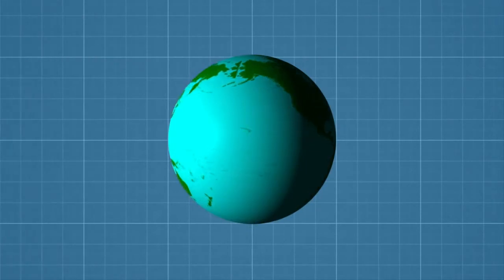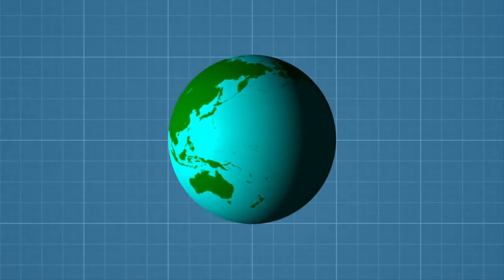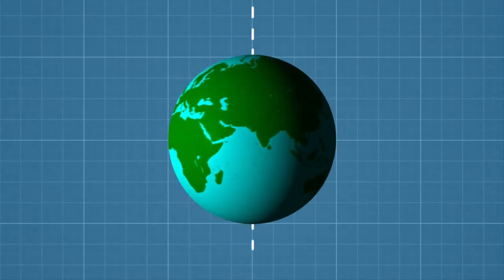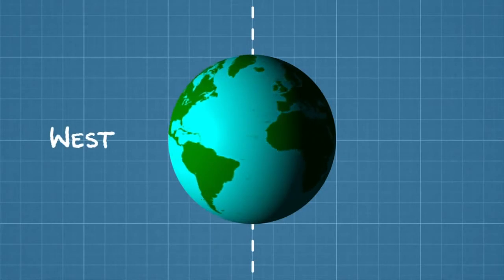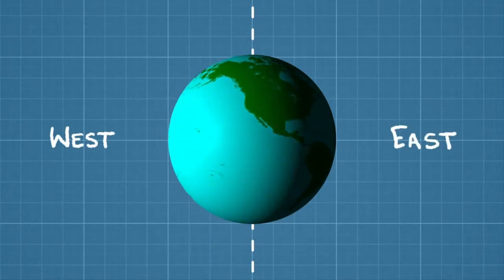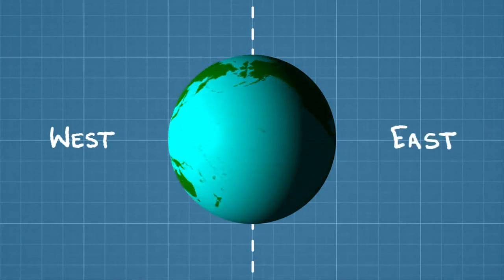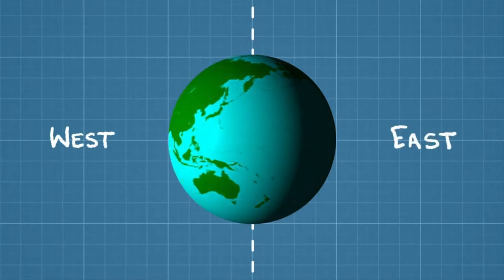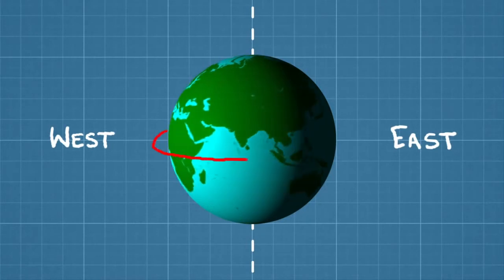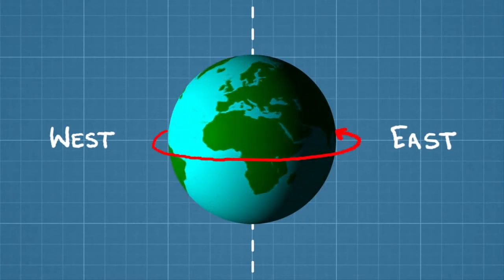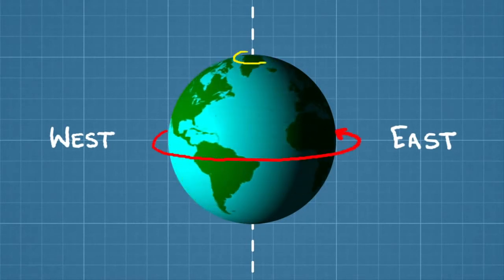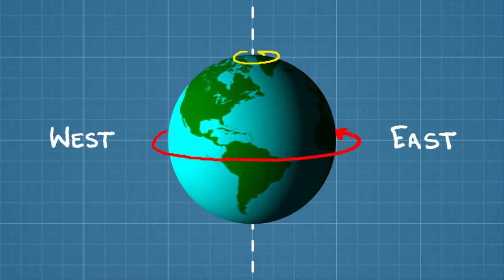Here's the basic idea. Earth is constantly spinning around its axis from west to east. But because Earth is a sphere and wider in the middle, points on the equator are actually spinning faster around the axis than points near the poles.